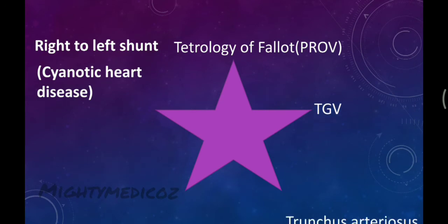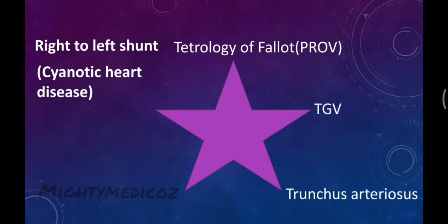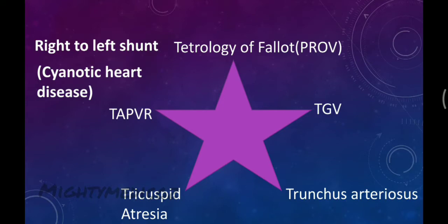Other cyanotic congenital heart diseases include: transposition of the great vessels (TGV), truncus arteriosus, tricuspid atresia, and total anomalous pulmonary venous return (TAPVR). There is also another entity called partial anomalous pulmonary venous return (PAPVR).